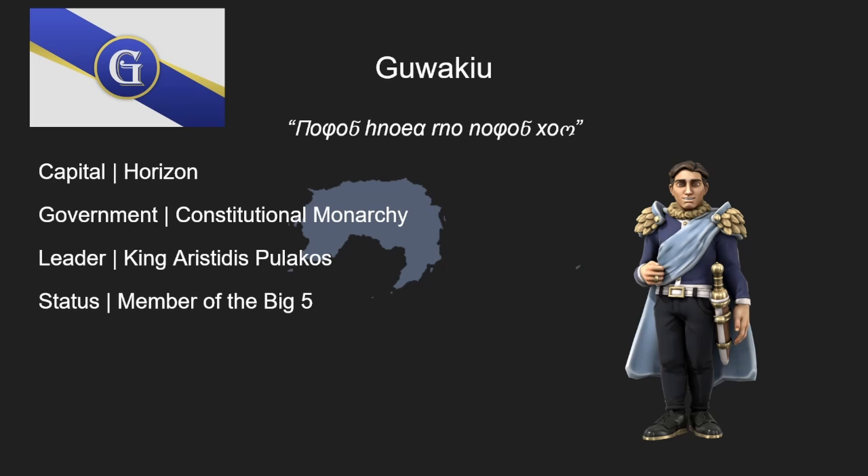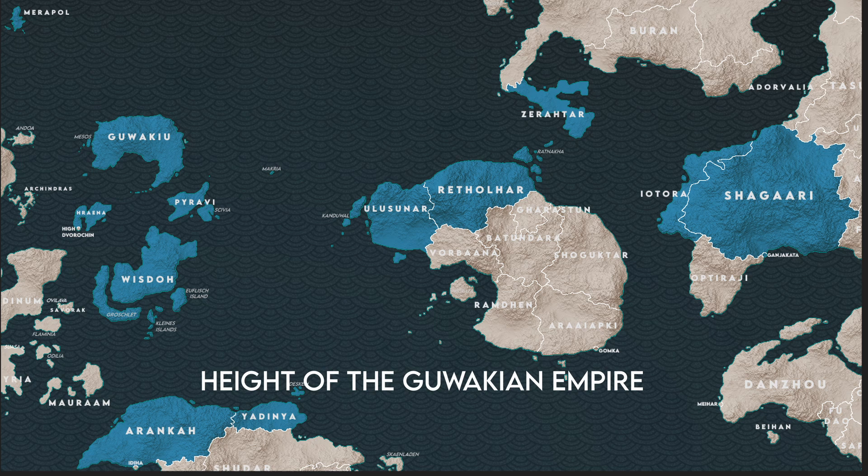Guwaku also had a large empire at one point. The Guwaku Empire spanned the Yamin-Hraenic world, which included not only Guwaku, but Piravi, the island of Hraena, Wisdo, and parts of former Semendar, including Rethelhar and Ulusonar. They also included Shigari, which is a large state in continental Basuna.